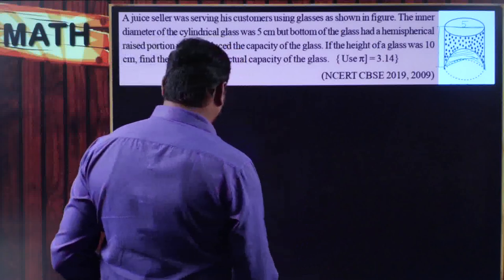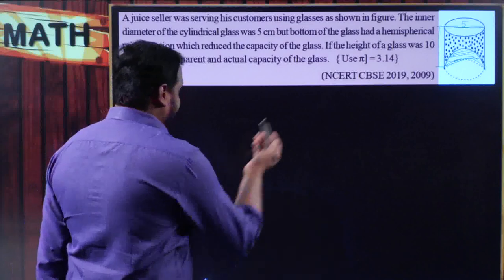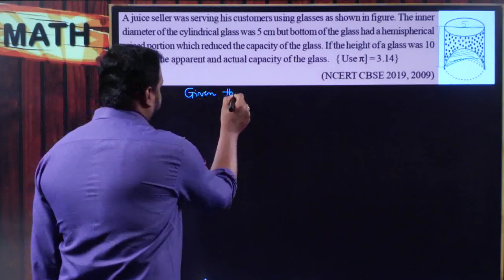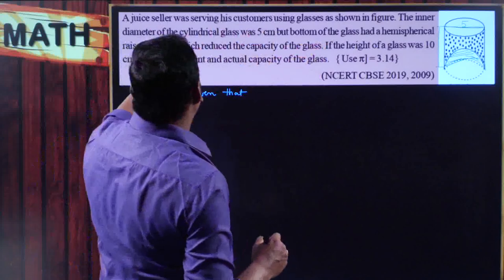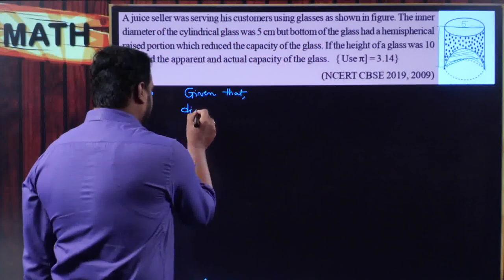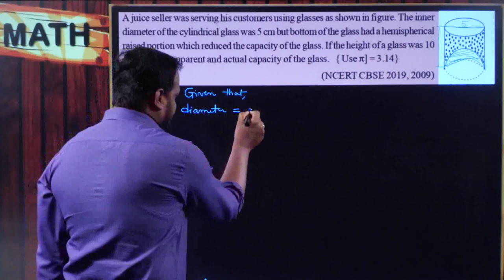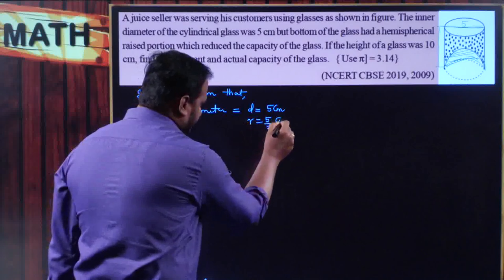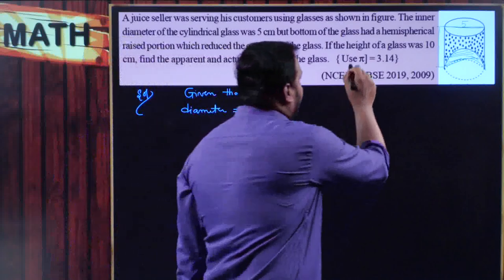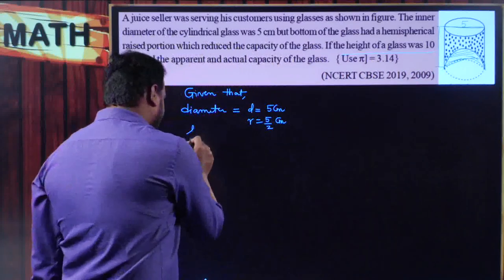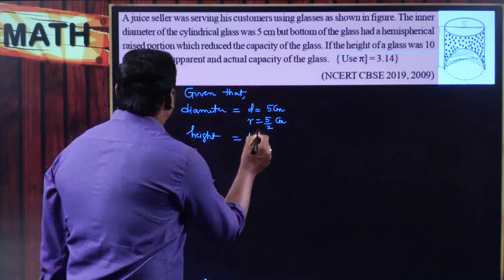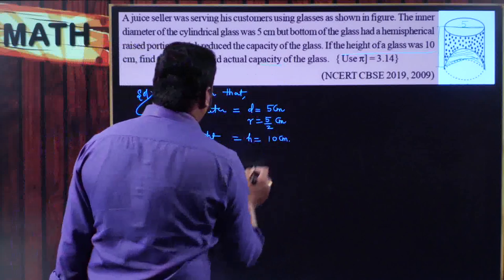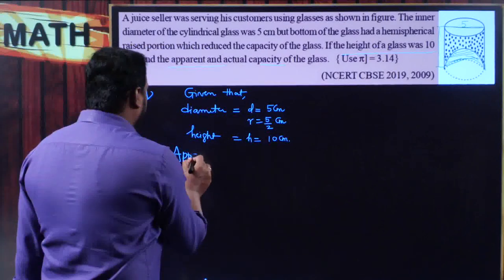Let us write the values from the information given in the problem. Diameter of the cylindrical glass d equals 5 centimeters, so radius equals 5 divided by 2 centimeters. Height of the cylindrical glass h equals 10 centimeters. With the help of this radius and height, I can find the apparent capacity. Keep in mind that pi should be used as 3.14, not 22 by 7, because the value of pi is mentioned in the problem.